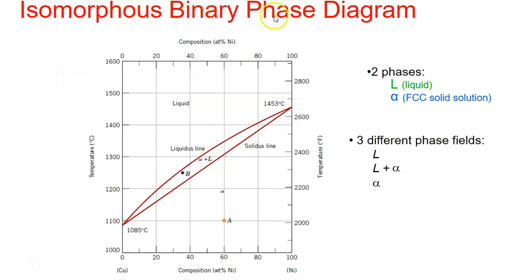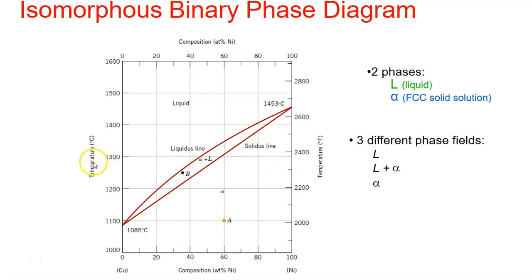We're going to start with the isomorphous binary phase diagram. The easiest type of binary phase diagram is probably the copper-nickel system. It's a diagram with temperature plotted along the vertical axis and composition in weight percent — or at the top, in atomic percent.